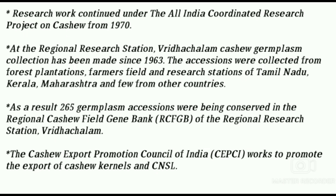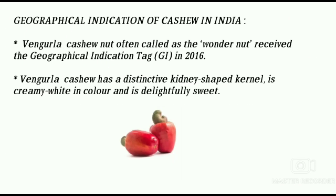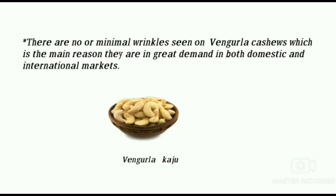The Cashew Export Promotion Council of India (CEPCI) works to promote the export of cashew kernels and CNSL. Coming to the geographical indication of cashew in India: Vengurla cashew nut, often called a wonder nut, received the geographical indication tag in 2016. Vengurla cashew has a distinctive kidney-shaped kernel, is creamy white in color, and delightfully sweet. There are no or minimal wrinkles seen on Vengurla cashew, which is the main reason they are in great demand in domestic and international markets.